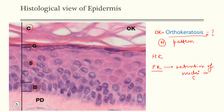There is retention of nuclei in stratum corneum. Normally, stratum corneum does not have a nucleus. In parakerytosis, the retention of nuclei in stratum corneum is seen. And when this corneum layer gets thickened — increased thickness — it is known as hyperkeratosis.